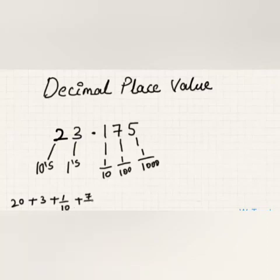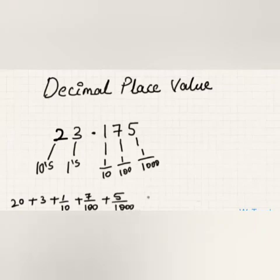Seven, which is in the one-hundredths place, becomes seven over one hundred, and five in the one-thousandths place becomes five over one thousand — which equals 23.175. Hence this is the expanded form for this decimal number.